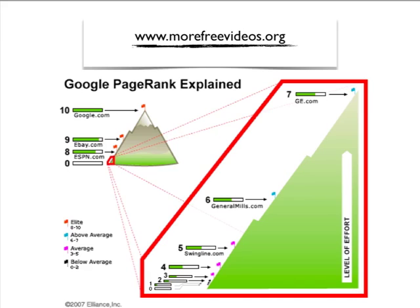Here's a great graph showing the mountain of PageRank: Google is a 10 right at the mountaintop, zero at the bottom. ESPN is an 8, eBay is a 9. You can describe these in terms of quality of sites — GE.com, General Mills, Swingline are at 4, 3, 2, 1. The level of effort and activity needed to build this high trust gets more intense as you move up.